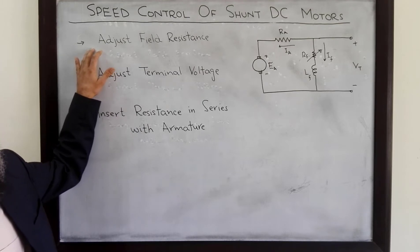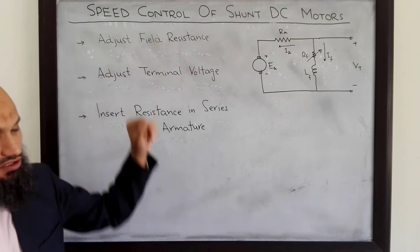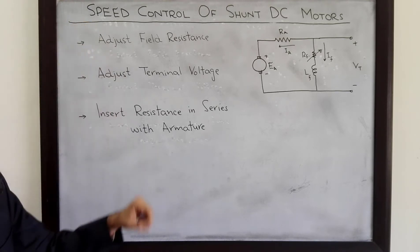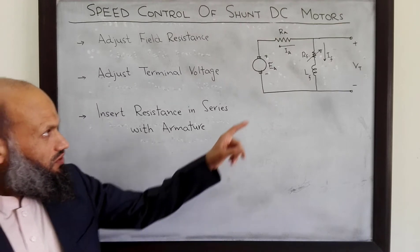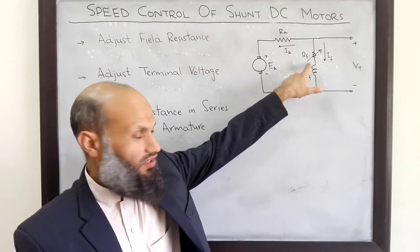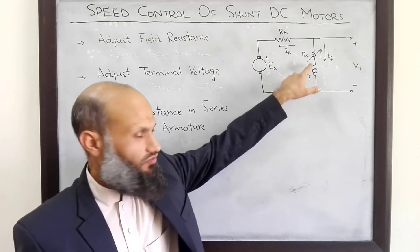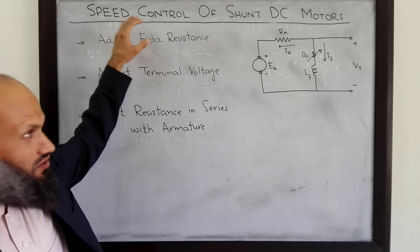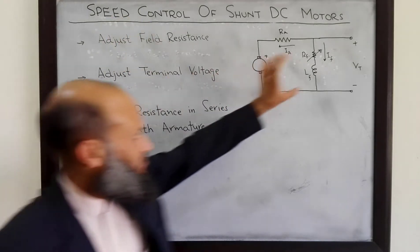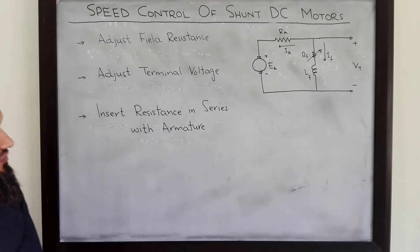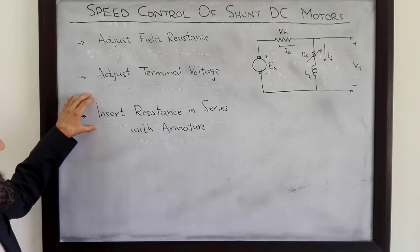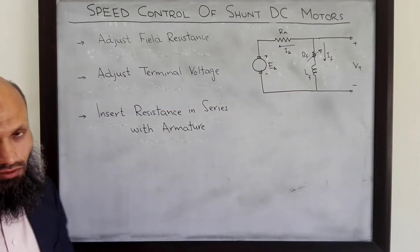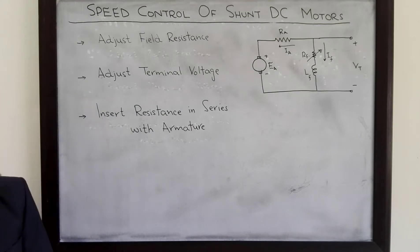Here are three different approaches that can be utilized to control the speed of a shunt DC motor. We can adjust the field resistance — there is a variable resistor inserted in series with the field winding that we can change to control the speed. We can also adjust the terminal voltage, and we may insert a resistor in series with the armature circuit as a third approach.